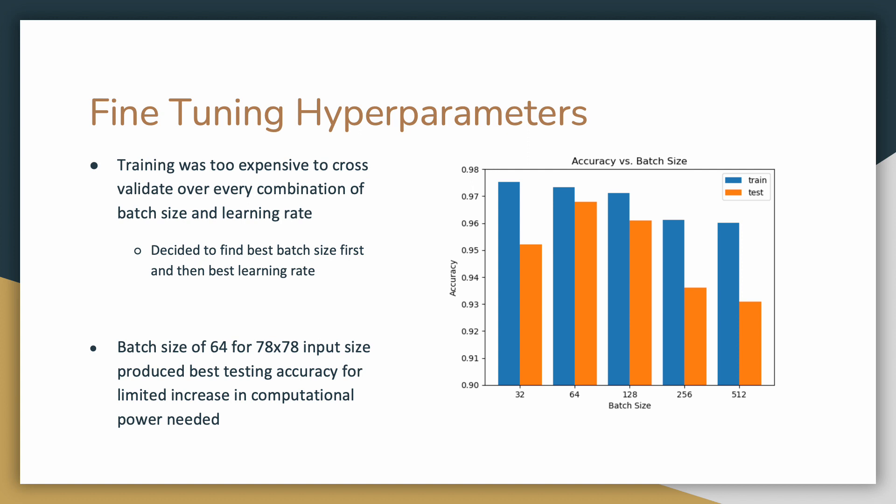First, we isolated the batch size on a model taking in 78 by 78 input images and training each different model for 30 epochs. As we can see from the plot on the right, a batch size of 64 resulted in the highest testing accuracy, and so we decided to keep a batch size of 64.